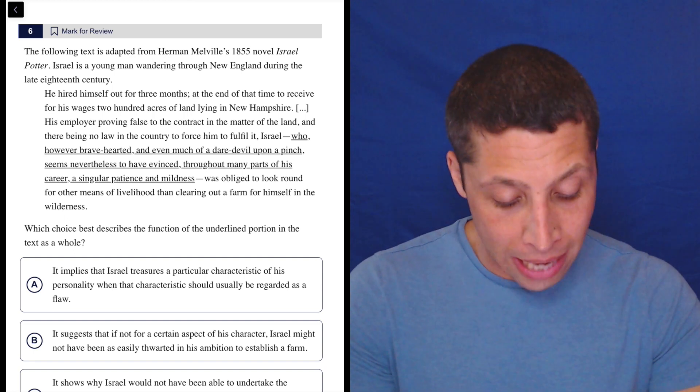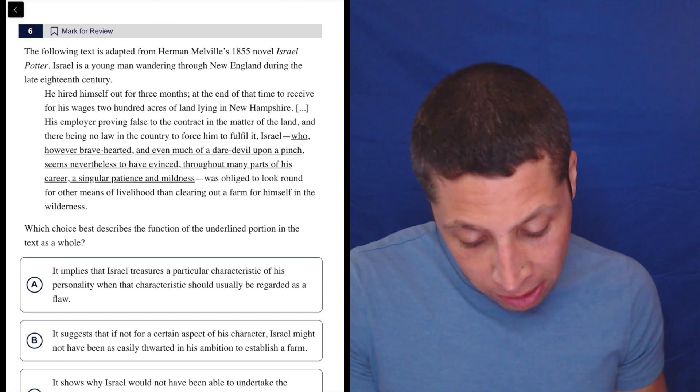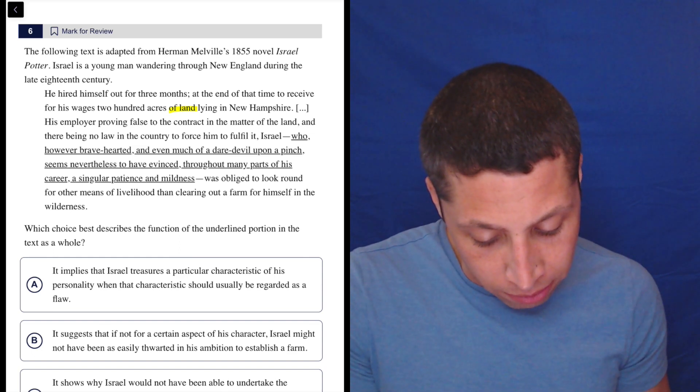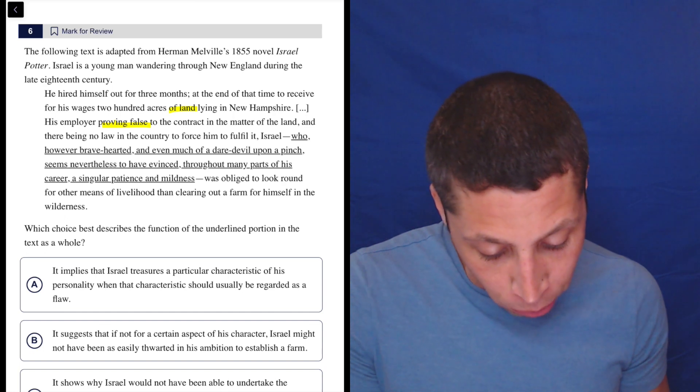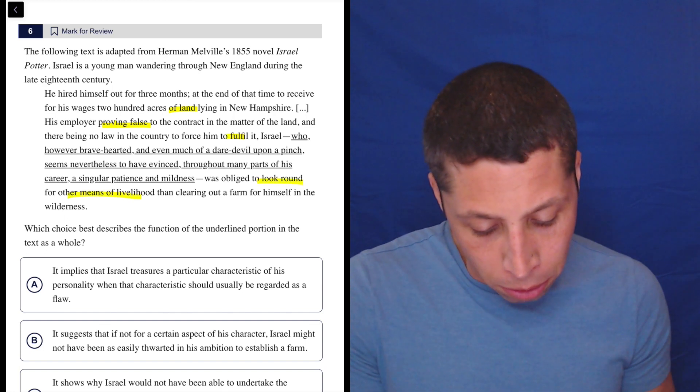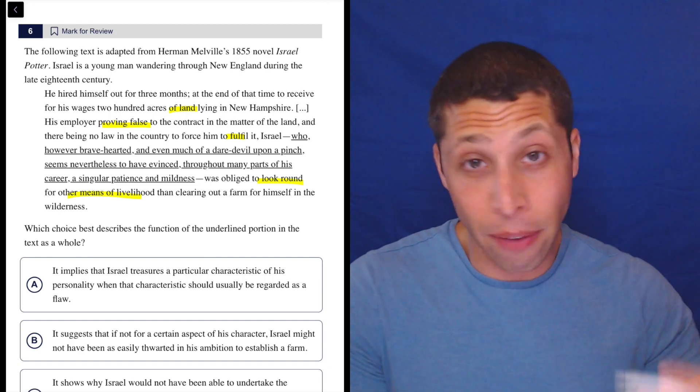So just be clear what's happening in this passage, right? Basically, we have he's promised land, right? But the employer is proving false, lied, and he's not able to fulfill it. So he's looking around then for other means of livelihood, right? So he's promised something, but he's not getting it and he's not fighting back. So now let's look at the choices.